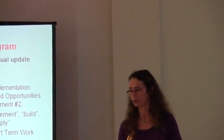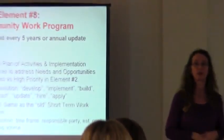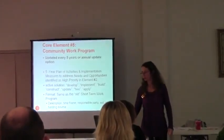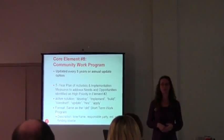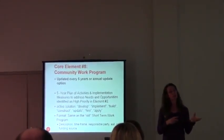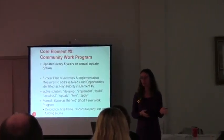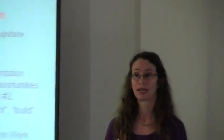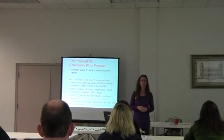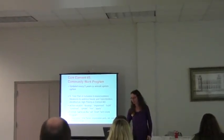The remainder of the format is just like the old short-term work program. You put in a description of the project — for example, we want to build a new community center or renovate the community center. You have to put in the time frame, the responsible party, and estimate the cost. That's a very important one, because submissions have been turned back if no cost figure was included. They can be estimates, they don't have to be totally accurate, but you do need to put in an estimate — you can't put in 'to be determined' or 'don't know yet' anymore.